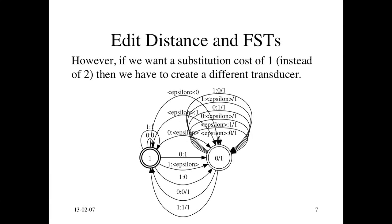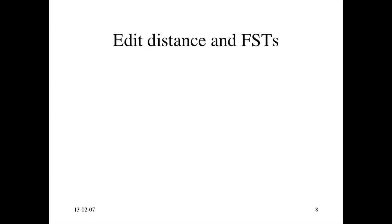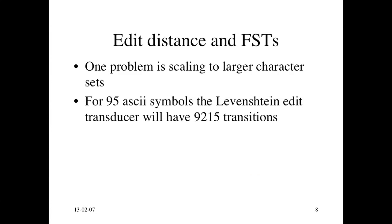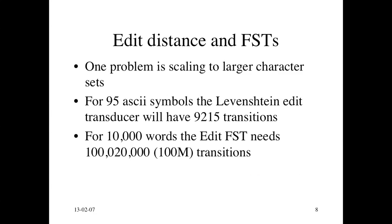So this is all very well. It works now with the substitution cost of 1. Here the equality cost is 0 and insertion, deletion and substitution cost of 1. But the problem is scaling to larger character sets. So if you have 95 symbols, then this edit FST I just showed you with substitution cost of 1 will have more than 9000 transitions. And if you're doing words, let's say you have 10,000 words, you have 100 million transitions. So this is getting out of hand. And in fact, if you look at the number of transitions, it's going to be on the order of V squared. Because you have to have a mapping from each character to every other character in order to get a cost of 1.